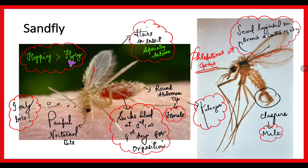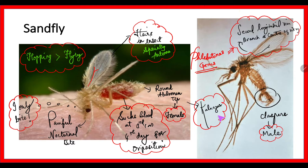Coming to sand fly — one important thing is that sand fly, although it has wings, tends to hop. It belongs to the genus Phlebotomus, which has a second longitudinal branch at the center of the wing. It is a hairy insect, especially in the antenna. Only the female sand fly will bite and suck blood, doing so on the third or fourth day for oviposition. To identify if it is female or not, check the abdomen — if it is round at the tip it is female; if it has a clasper then it is male. The disease it causes is kala-azar. It is smaller than a mosquito and has a more painful bite, active in nocturnal time.